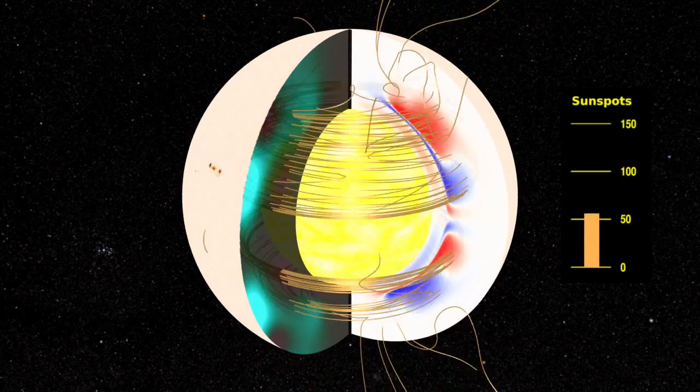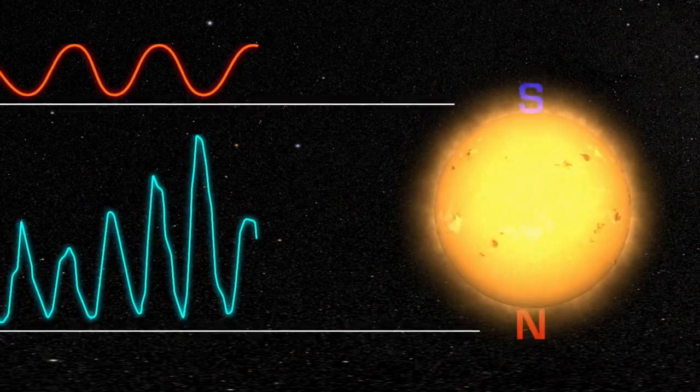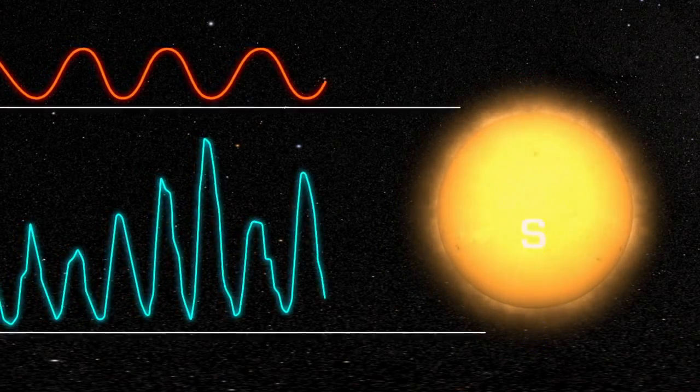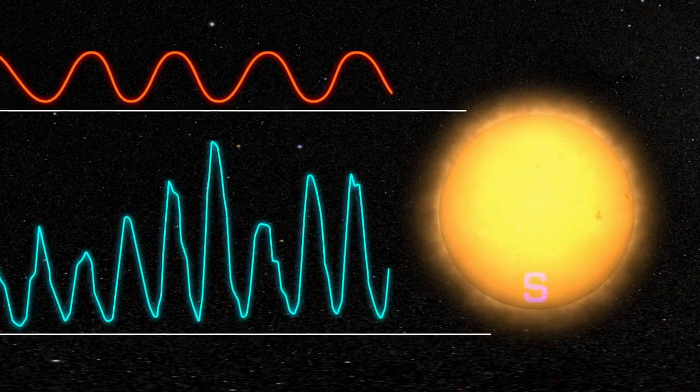Because the sunspot cycle follows a similar pattern regardless of the orientation of the poles, it only takes half as long as the solar cycle. The two cycles are different, but the 11-year sunspot cycle is often referred to as the solar cycle, which can be a little confusing.